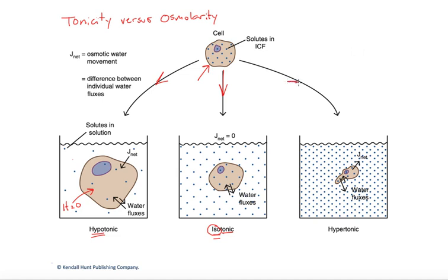If we go over to the far right, we do the opposite: we take a cell and drop it into a more concentrated solution. In this case, the solution on the outside is hypertonic — more concentrated. Now the chemical activity of the water on the inside of the cell would be higher, driving it outward and causing the cell to shrink.